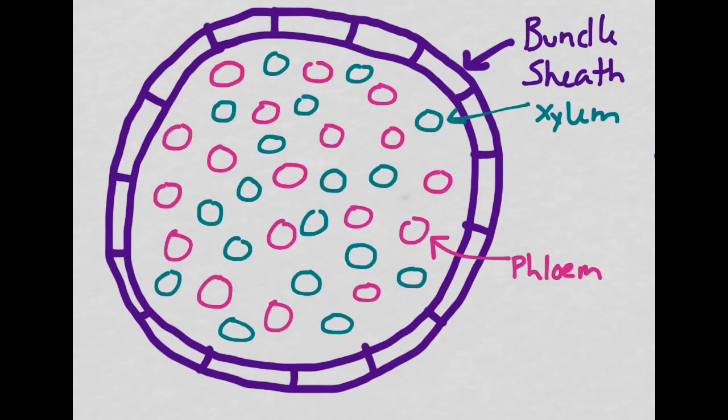Inside the bundle sheath cells is a tightly packed group of tubules called xylem and phloem. The purpose of the xylem is to bring the water up from the roots of the plant in order to nourish the leaves. Remember that water is a key component in photosynthesis.